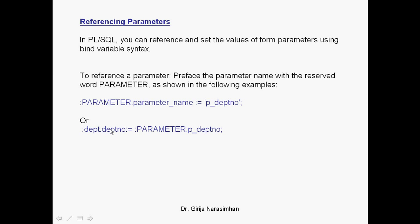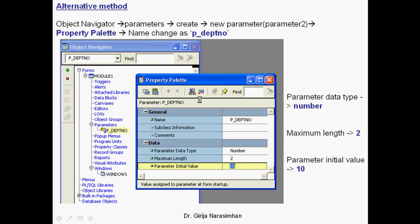This way you can assign the parameter to a particular block — this is the block name. The table_name dot item_number is equal to the parameter. Another method is using the Property Parameter Palette via the Object Navigator: go to Parameters, click Create, enter the parameter name as p_department_number. The data type is Number and maximum length is 2.